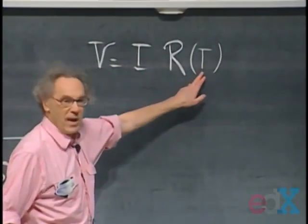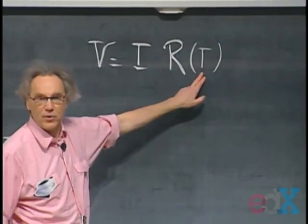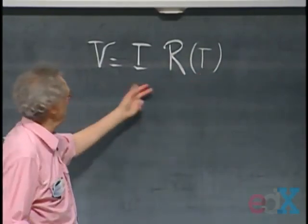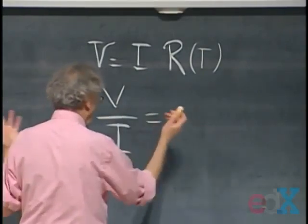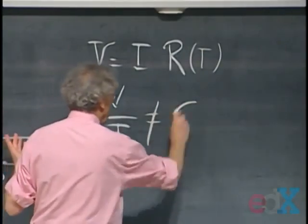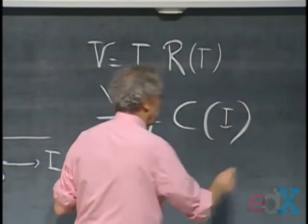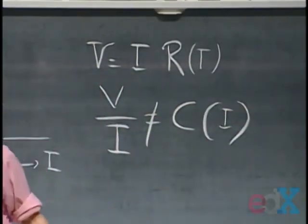Because the temperature itself is a function of current. The higher the current, the higher the temperature. And so now you get a ratio, V divided by I, which is no longer constant. It becomes a function of the current. That's the end of Ohm's law.